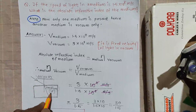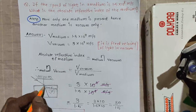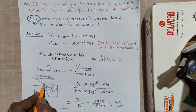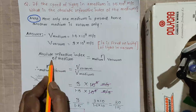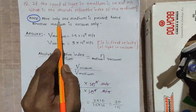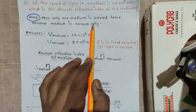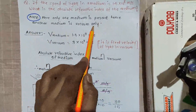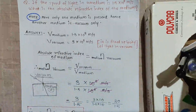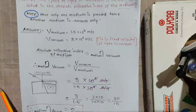The light will bend since vacuum is the rarer medium and water is the denser medium. At the point of incidence, we calculate the absolute refractive index of the medium with respect to vacuum. Note: only one medium is present — water — so the other medium is vacuum by default, meaning the light ray is coming from vacuum and going inside the water medium.